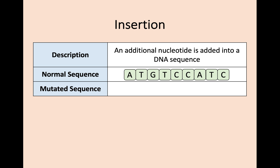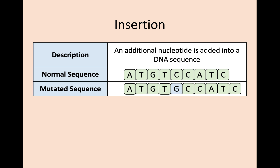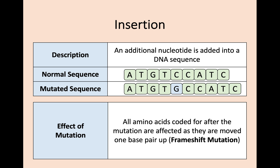Insertion is when an additional nucleotide is added into a DNA sequence — nothing's actually being replaced. So we have the same normal sequence, but this time in the mutated sequence a guanine base has been added; it's been inserted. The impact this makes to the rest of the normal sequence is that by inserting one new nucleotide, everything else in that base sequence has now been shifted up. You've had a direct impact on every other triplet throughout the rest of that sequence, meaning all the amino acids coded for after that mutation are all affected because they've been moved one base pair up.